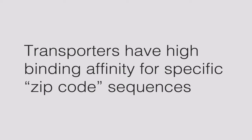Each transporter protein has high binding affinity for specific zip code sequences. There are many examples of localization signals directing protein transport. Each of these transport processes will be discussed in more detail in other CellClips videos, but for now let's look briefly at a few zip code sequences.